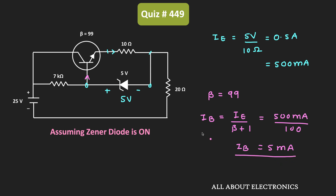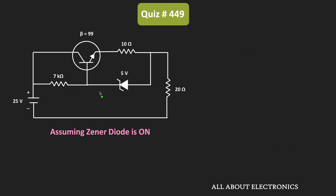With this assumption, let us apply KVL in the outer loop. Let us assume that the current through the 7kΩ resistor is equal to I. This current I is the summation of the base current IB plus the current through the Zener diode IZ, because this current I divides into two branches. So the current through the 7kΩ resistor equals IB + IZ.